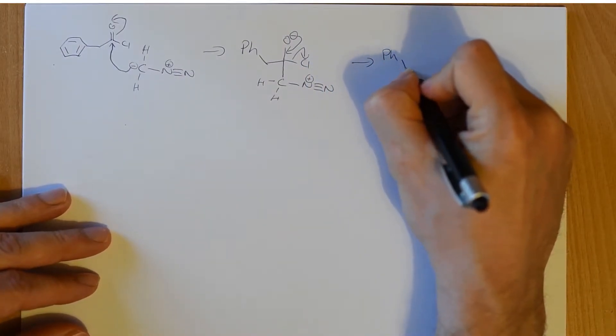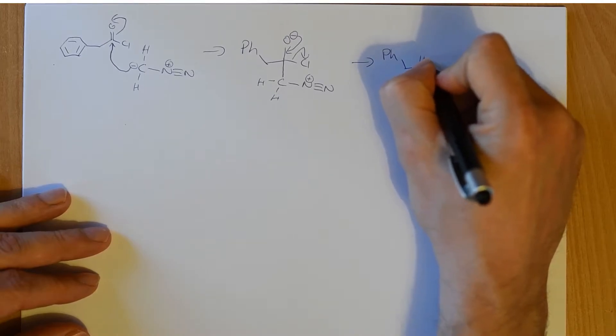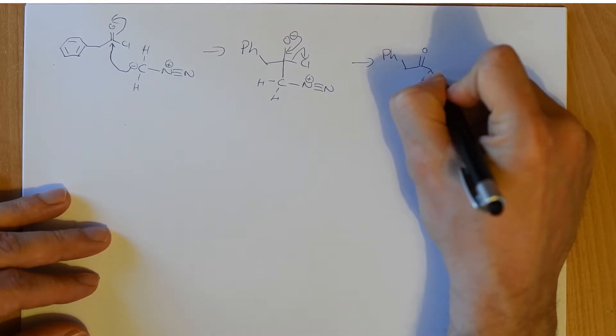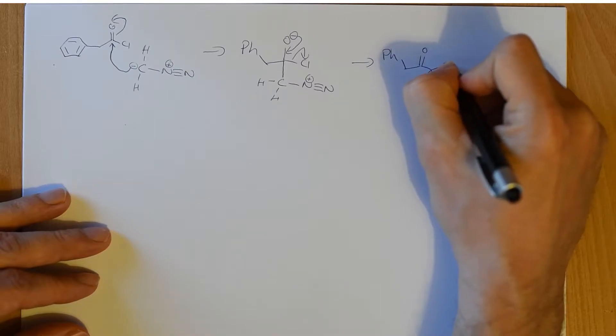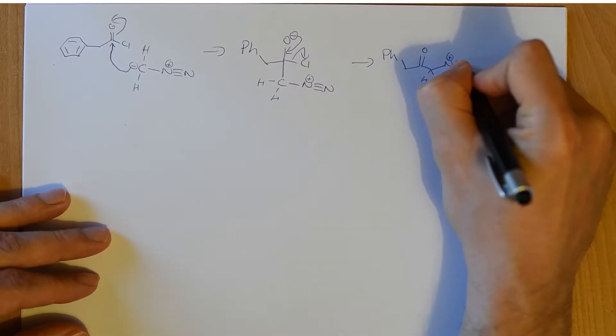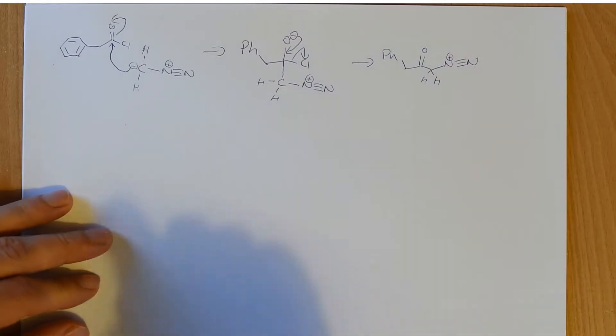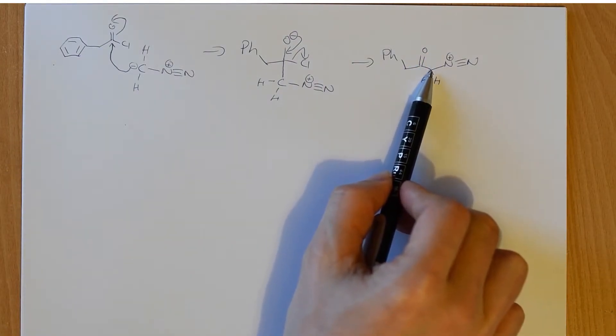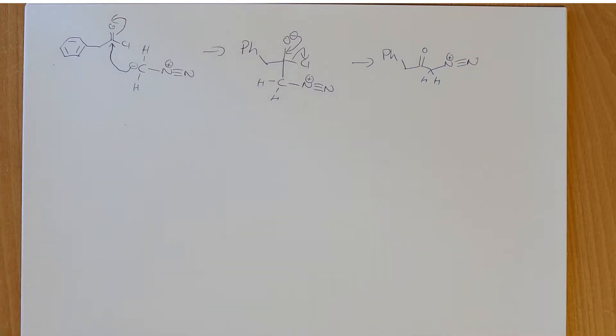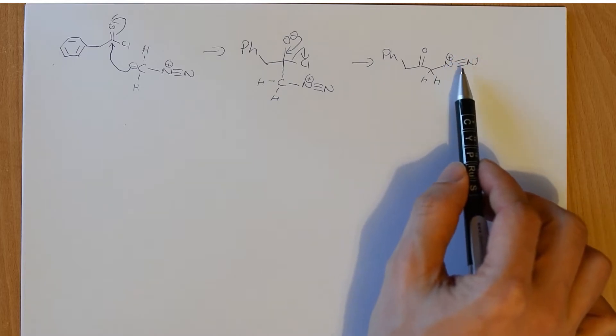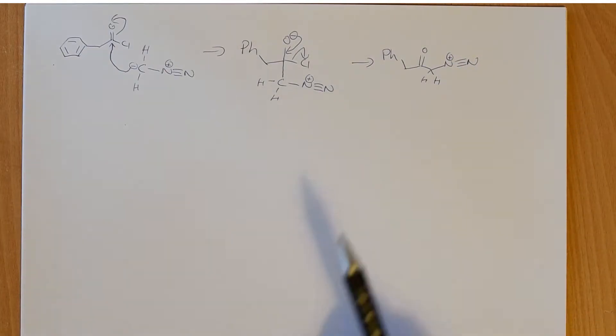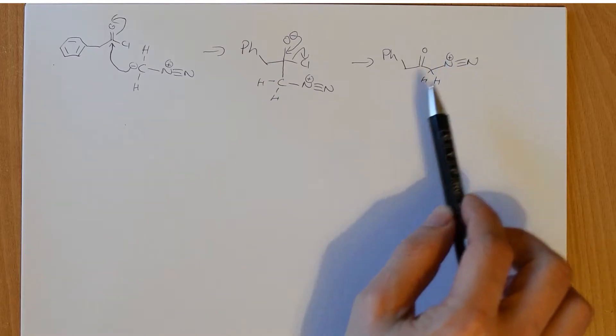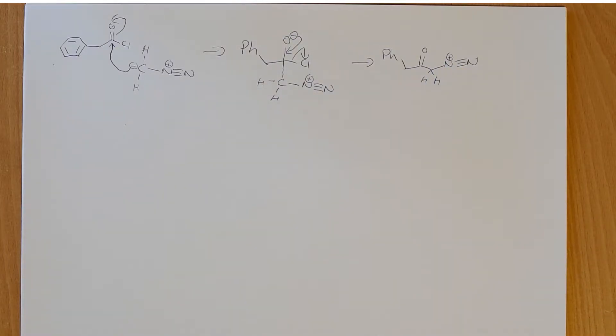Now we have a particular set of functional groups that we can imagine are going to do interesting chemistry. We have our carbonyl, and on the alpha carbon we have a diazonium. And this diazonium here is one of the best leaving groups you're going to find. Positive charge on the nitrogen. We'd love to take that pair of electrons away. And when it does, it's going to produce nitrogen gas.